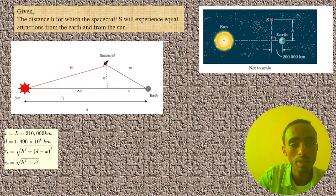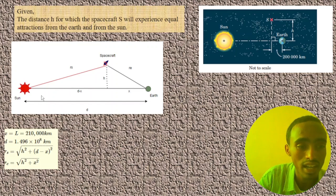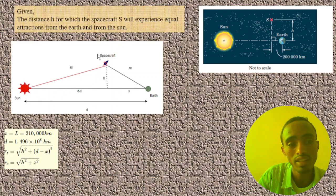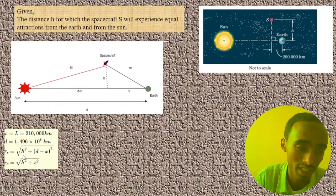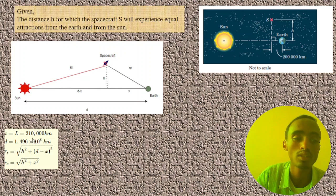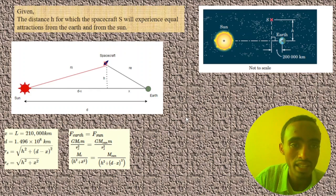We use the Pythagorean theorem to find RS and RE. RS is the hypotenuse: RS = √(H² + (D − X)²), where H is the adjacent side. Similarly, RE = √(H² + X²). Using these trigonometric relationships we can solve for H.